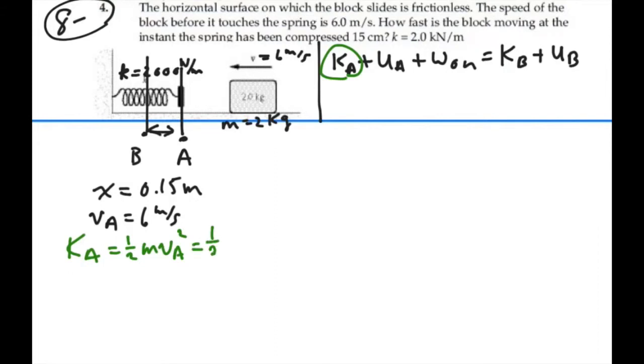So that's going to be one-half times 2 kilograms times 6 meters per second squared. The one-half and the two cancel out. And this will give us 36 joules. So that is the kinetic energy at point A.